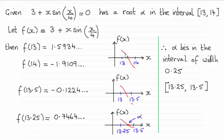So I knew that my graph would be something like this, crossing the x-axis between 13 and 14, positive at 13, negative at 14.